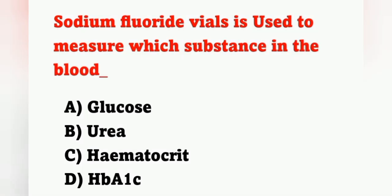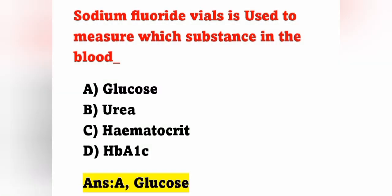Next question: sodium fluoride vials are used to measure which substance in the blood? Option A: glucose. Option B: urea. Option C: hematocrit. Option D: HbA1c. Sodium fluoride vials are used to measure glucose in the blood. Option A is the correct answer. HbA1c is collected in EDTA bottle.